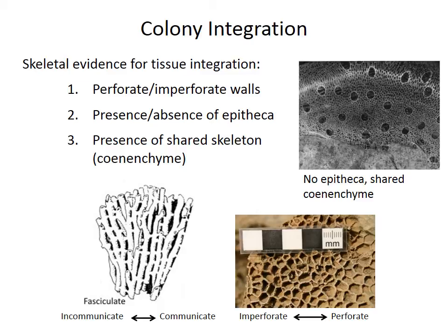This suggests that the individual corallites were somehow working together to deposit a skeleton that was not necessarily associated with one individual polyp, so there must have been some soft tissue covering it that allowed them to share nutrients or otherwise share tissues.